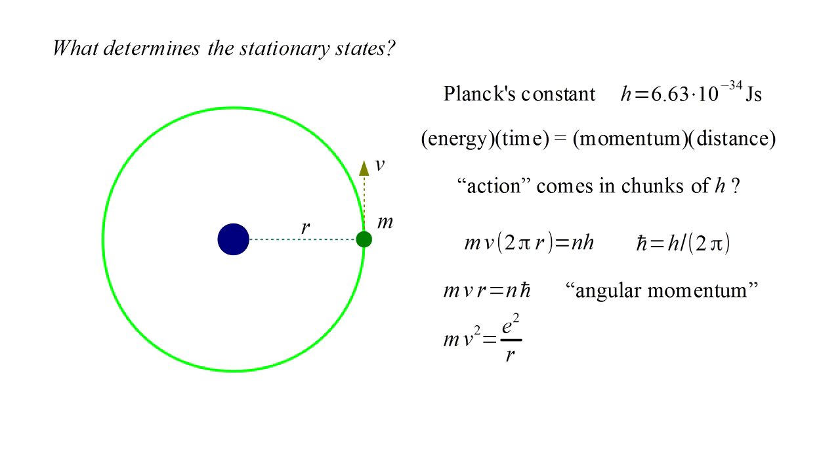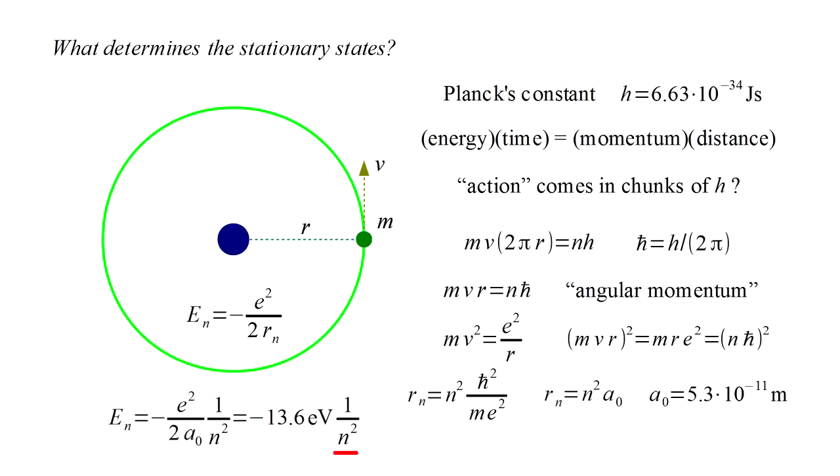Previously we saw that mv² equals e² over r. We can manipulate this to find that the quantity mvr² equals mre² and solve for the radius. We find that the nth radius rn equals n² times a constant. We call this constant a₀, the Bohr radius, and we find its value to be 5.3 times 10 to the minus 11th meters. The orbit's energy is minus e² over 2rn, and plugging in values we arrive at the following result. The energy corresponding to orbit with quantum number n equals minus 13.6 electron volts over n².